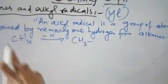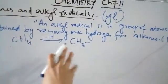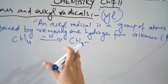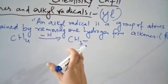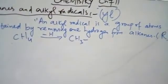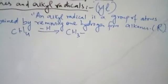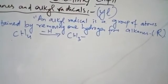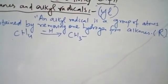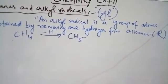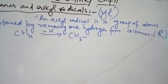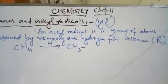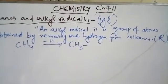For example, if we remove hydrogen from methane, it is not satisfied because carbon's valency is 4. When we disturb carbon's valency, its valency becomes dissatisfied, and it will convert into a radical, which is called a methyl radical.